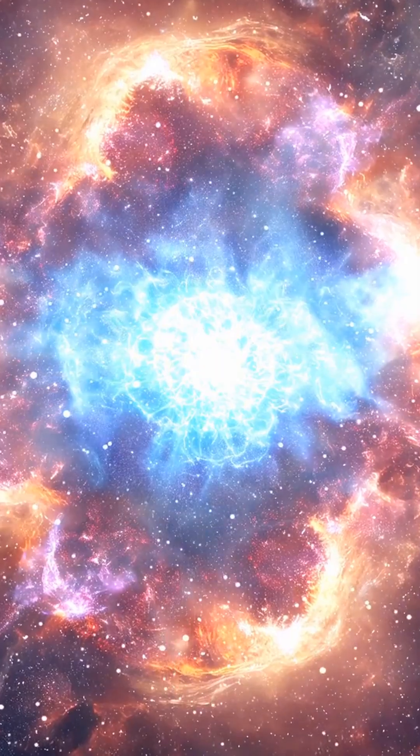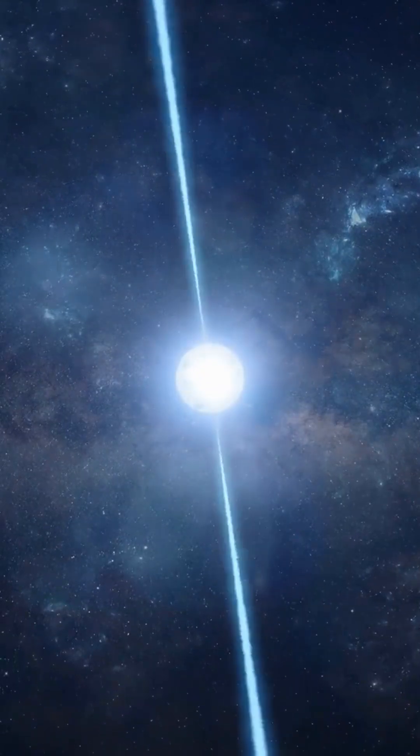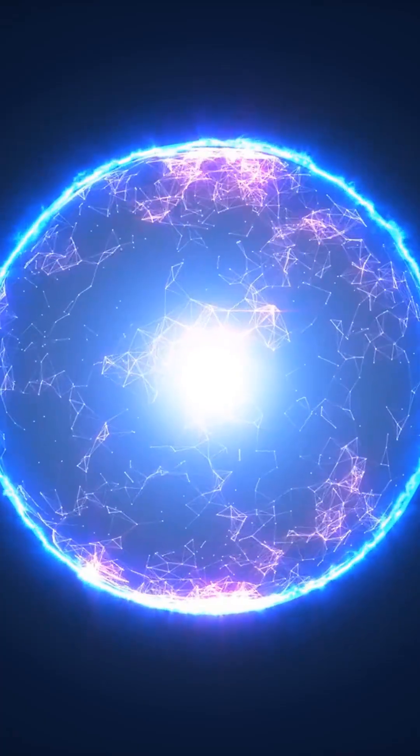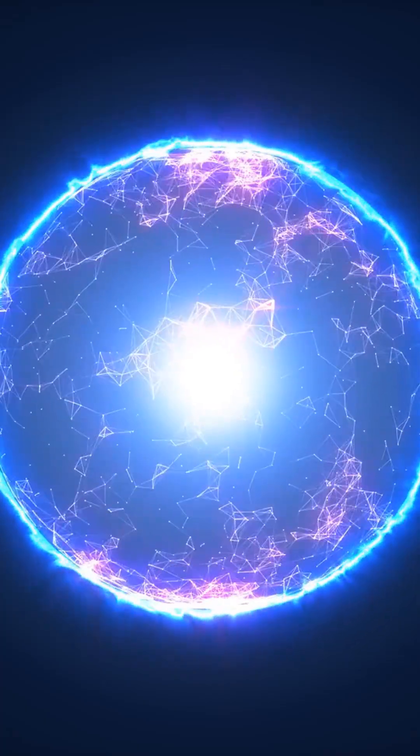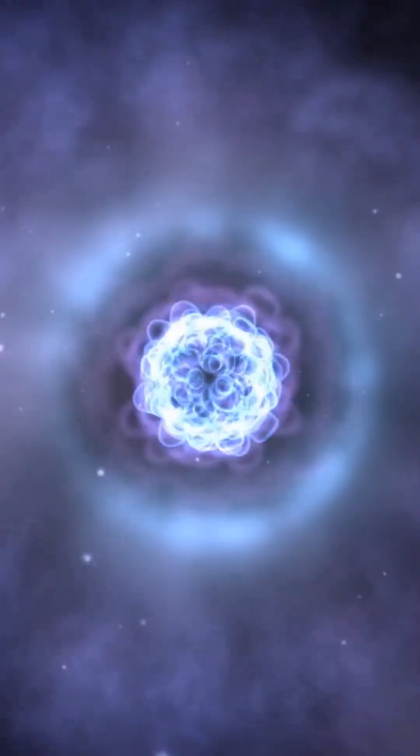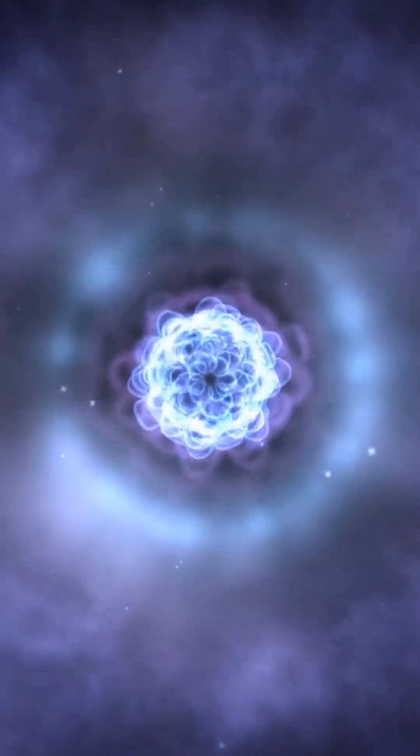A neutron star is incredibly dense. Just a teaspoon of its matter would weigh about a billion tons. They often spin rapidly and shoot out powerful beams of radiation.